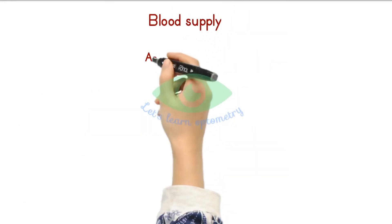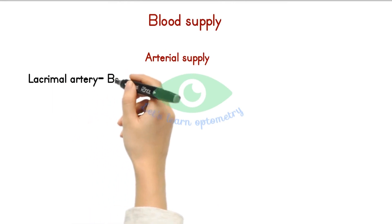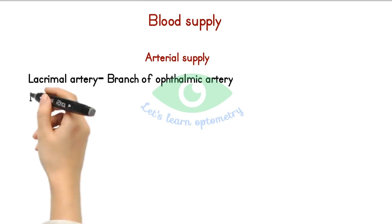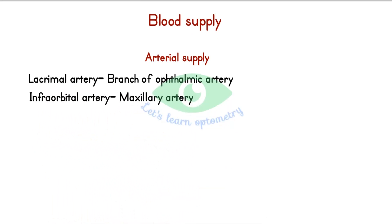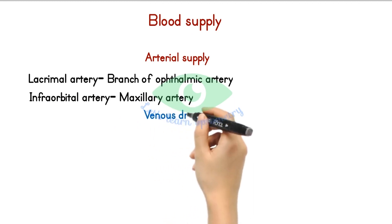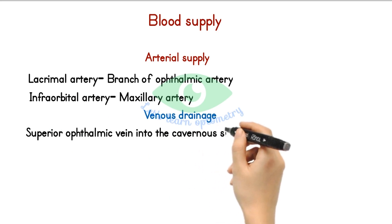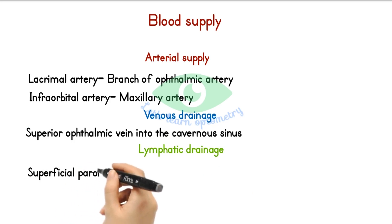Blood supply: the lacrimal gland is supplied by the lacrimal artery, which is a branch of the ophthalmic artery. The gland is also sometimes supplied by the infraorbital artery, which is a branch of the maxillary artery. The lacrimal gland is drained by the superior ophthalmic vein into the cavernous sinus. Lymphatic drainage is by the superficial parotid lymph nodes, which drain into the superior deep cervical nodes.